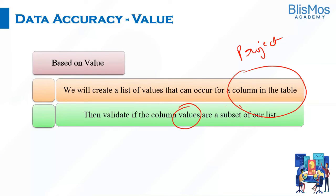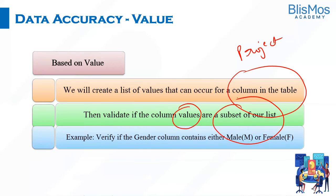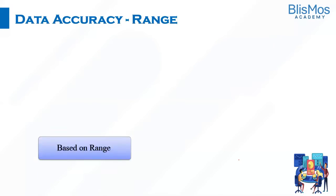We validate that the column values are a subset of that list. For example, to verify the gender column, we may have male, female, and cross-gender — at most, the gender column would have only three values. The values in that column should be either male, female, or cross-gender, and not more than that.